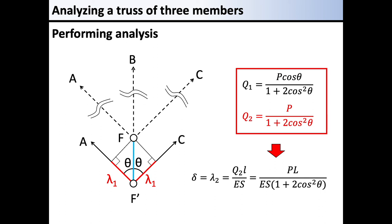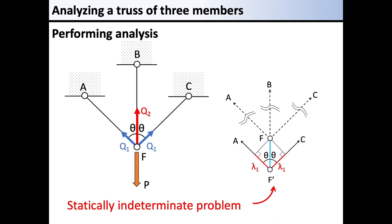The displacement of the member BF is defined by the equation. In this problem, the axial forces Q1 and Q2 acting on the members cannot be determined only with the balance of forces, so this is a statically indeterminate problem. The approach uses the condition of deformation together with the balance between external and axial forces to find both the forces on the side members and the center member — this is how to analyze the structural deformation in this problem.